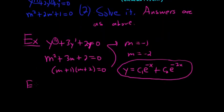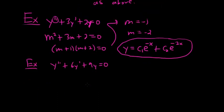Let's do another one. How about this one? y double prime plus 6y prime plus 9y equals 0. So in this case, the characteristic or auxiliary equation would be m squared plus 6m plus 9 equals 0. This factors. This is m plus 3 quantity squared equals 0.